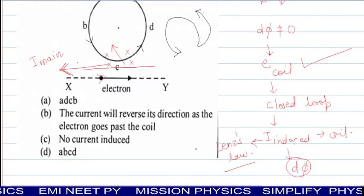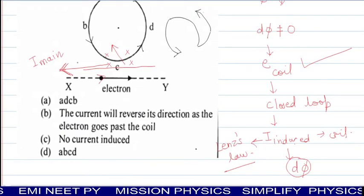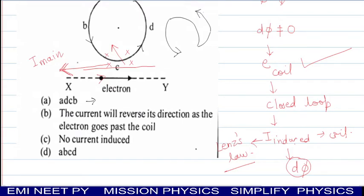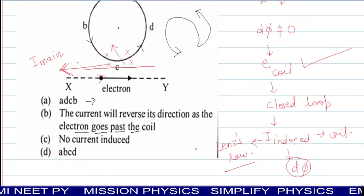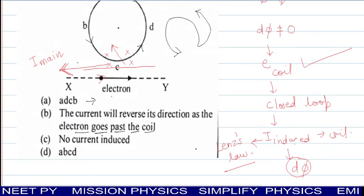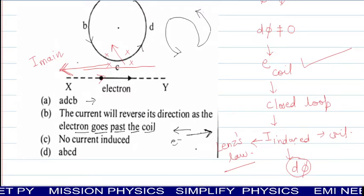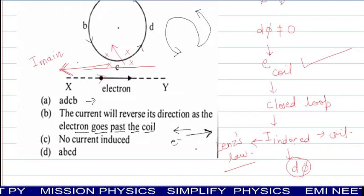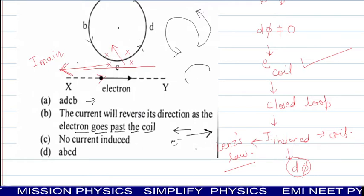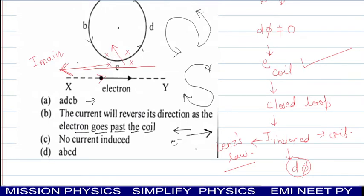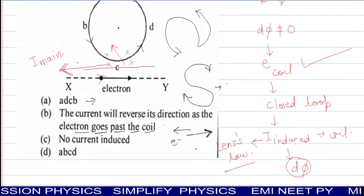But no anticlockwise option is there. We can say A, D, C, B doesn't satisfy because it shows clockwise. Now check second option B - it says electron goes past the coil. Meaning electron is going away from coil. When electron goes away, current will approach towards coil. Then direction of induced current will be clockwise. It means current will reverse its direction as electron goes past the coil. This is again by Lenz's law - at that time also it will repel.